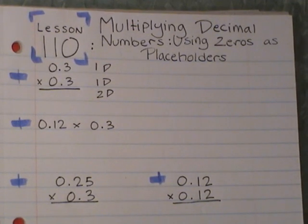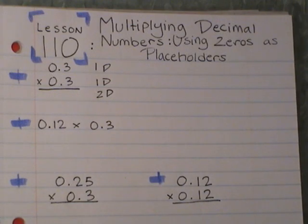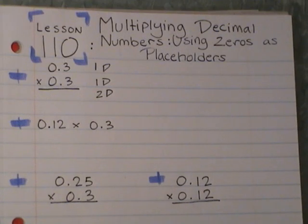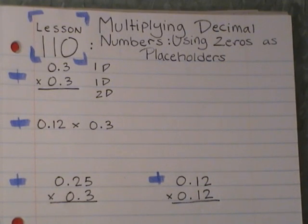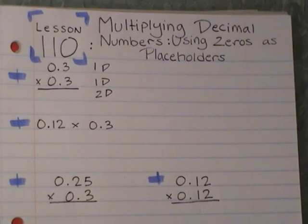Tonight's lesson is lesson 110, and we are practicing multiplying decimal numbers and using zeros as placeholders. We kind of did a lesson very similar to this yesterday, but we're going to do it a little bit different today. It's probably going to be one of our shorter videos that we have had this year, which I know you guys like.